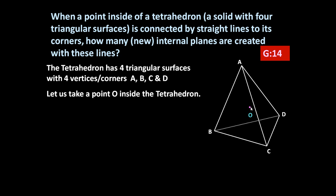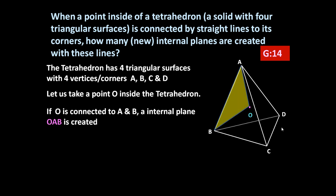Point O is inside the tetrahedron and it is connected by straight lines to its corners. When O is connected to A and B, a plane surface will be created. So if O is connected to A and B, an internal plane OAB is created.